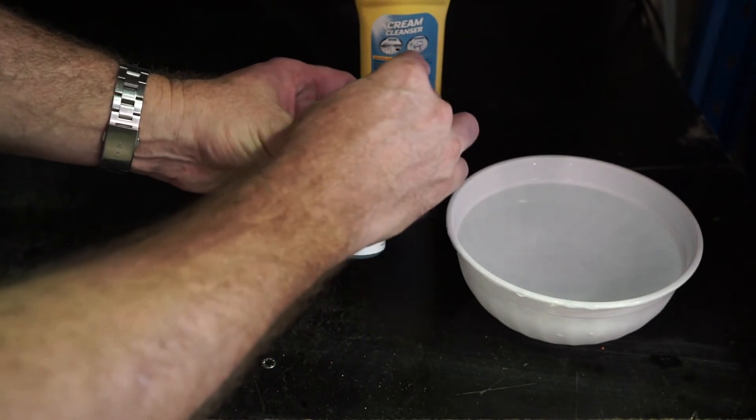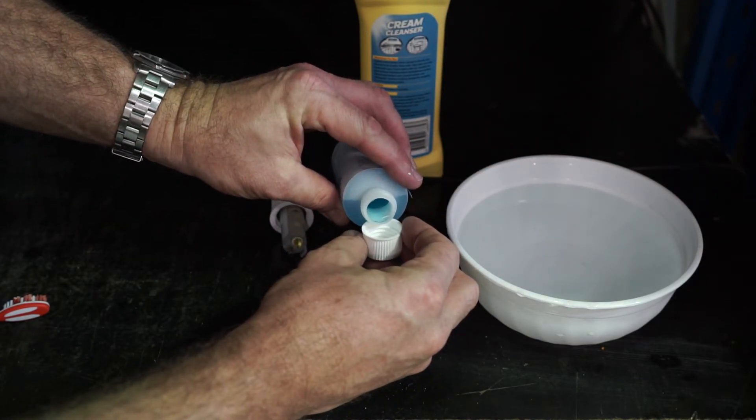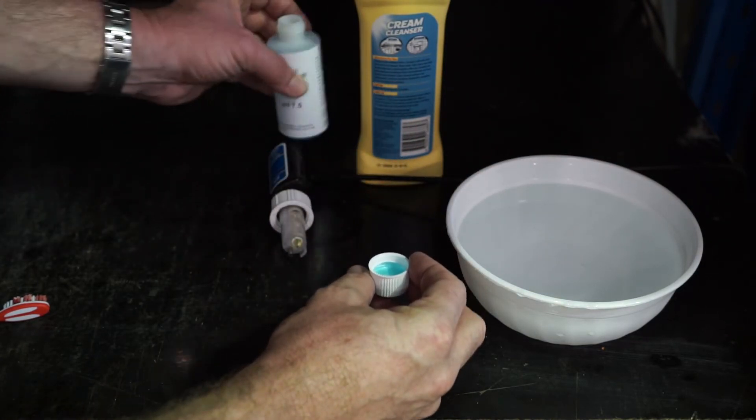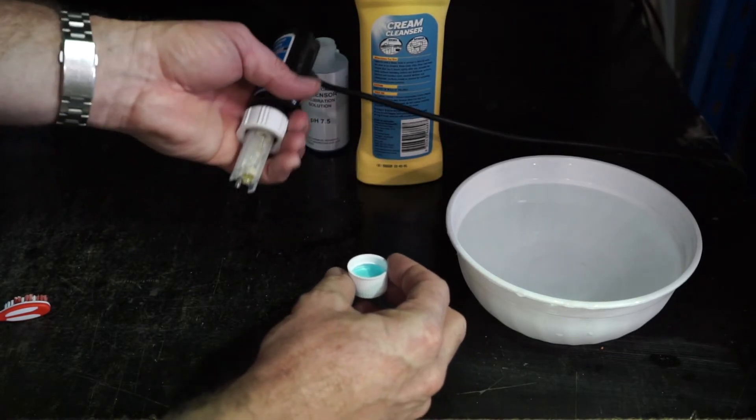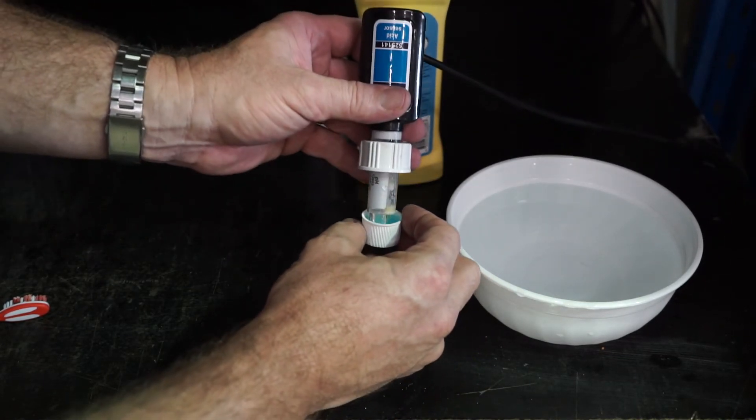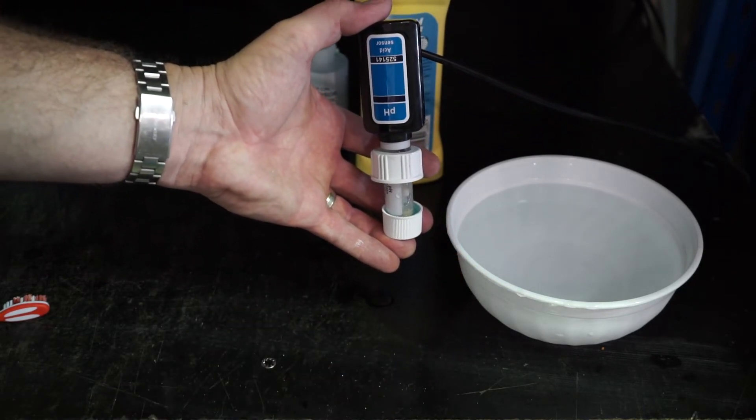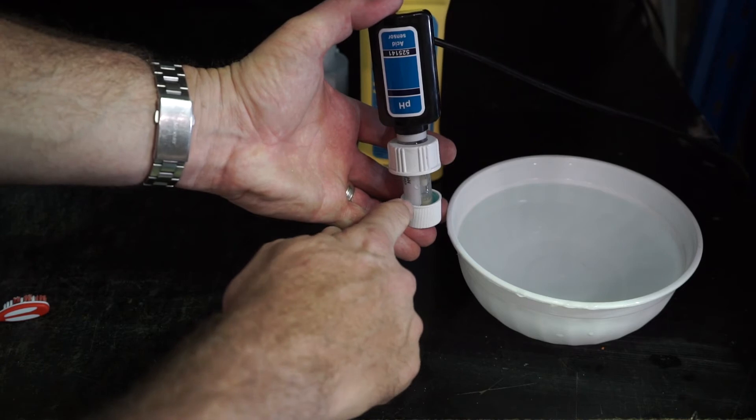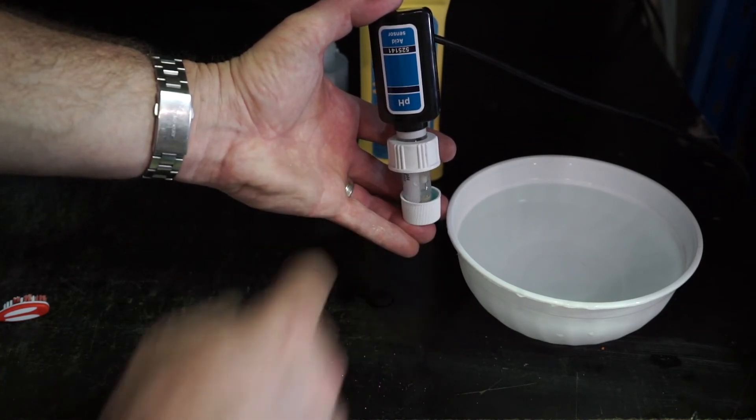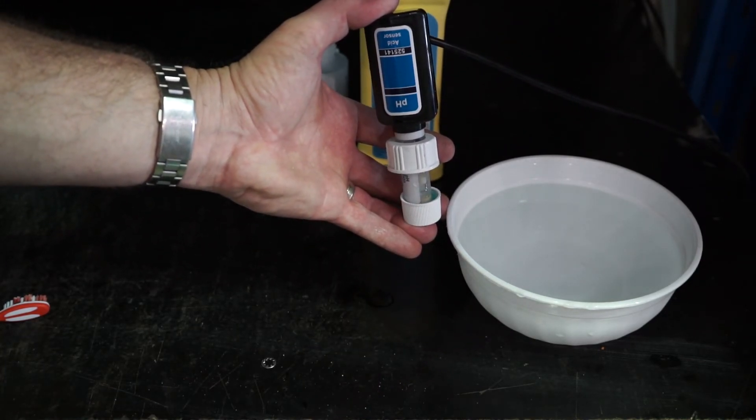All we need to do is just pour a small amount into the top of the cap. And then we will simply hold our probe in the cap with the solution, making sure that the solution is covering the top of the tip completely.